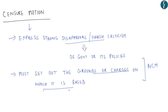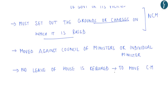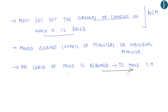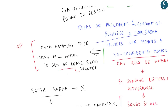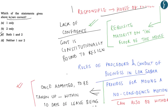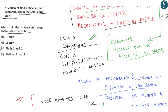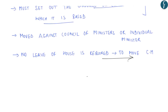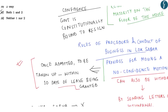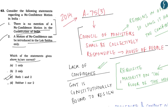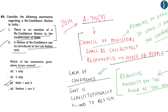A censure motion can be moved against the council of ministers or an individual minister, and no leave of the house is required to move a censure motion. If a no confidence motion is passed, it leads to the compulsory resignation of the council of ministers, or dissolution of the government. Whereas, a censure motion does not lead to dissolution of government. This news becomes important as a direct question was asked in 2014.